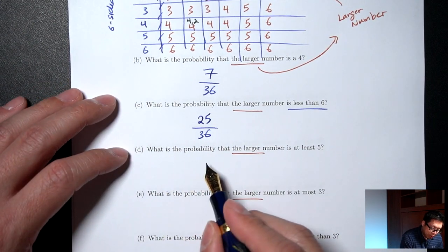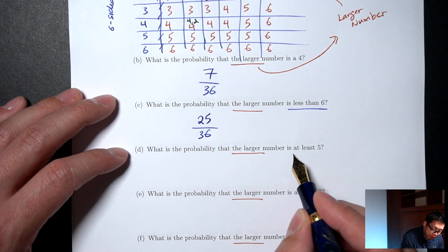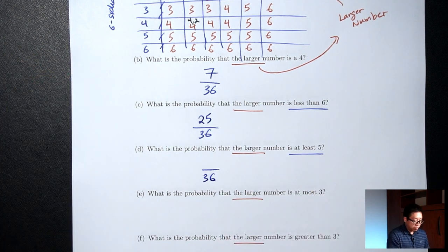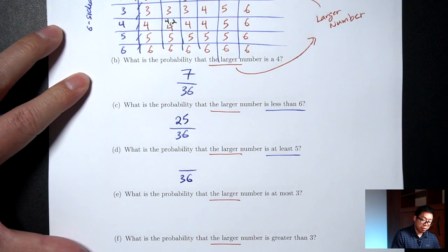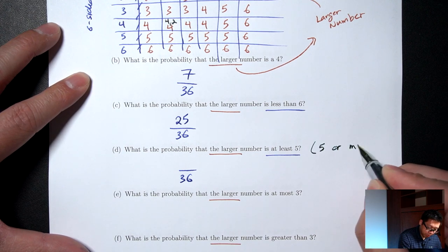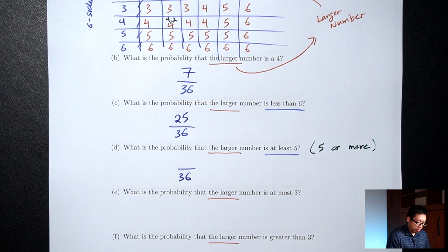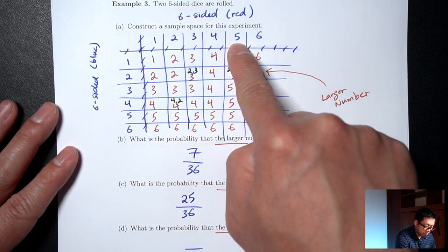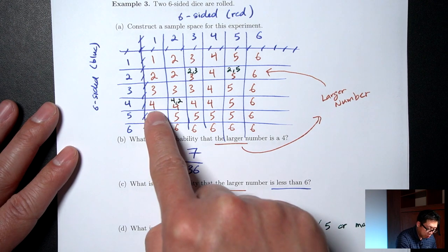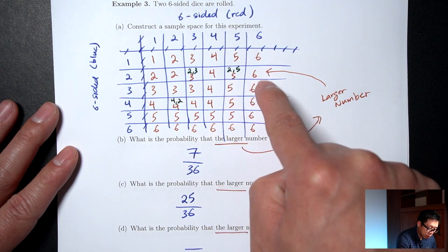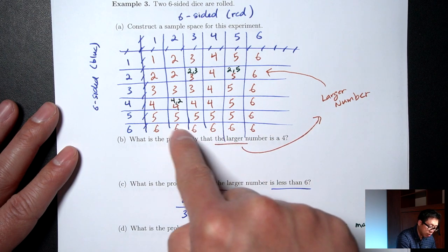Part D: what's the probability that the larger number is at least 5? Bottom is 36. At least 5 means 5 or more, so that's all the 5s and all the 6s. Counting those: 20 outcomes. Probability is 20/36.